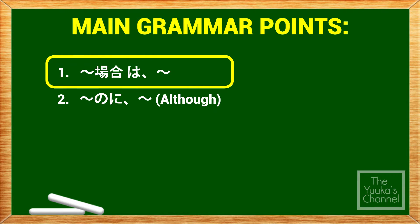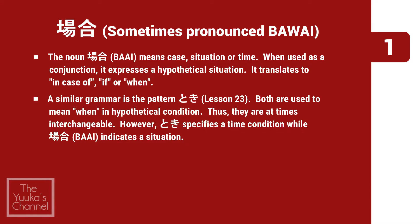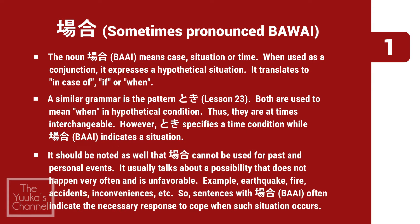First topic: baai, or sometimes pronounced bawai. The noun baai means case, situation, or time. When used as a conjunction, it expresses a hypothetical situation. It translates to 'in case of,' 'if,' or 'when.' A similar grammar is the pattern toki. Both are used to mean 'when' in a hypothetical condition. They are at times interchangeable. However, toki specifies a time condition, while baai indicates a situation. It should be noted that baai cannot be used for past and personal events. It usually talks about a possibility that does not happen very often and is unfavorable.